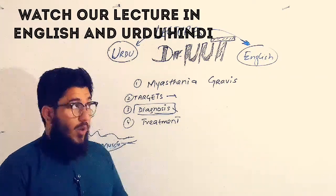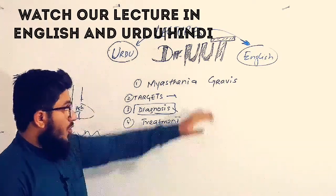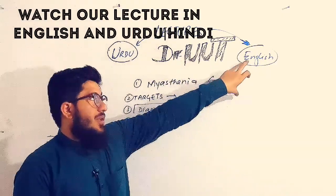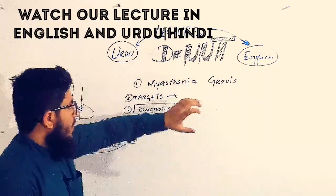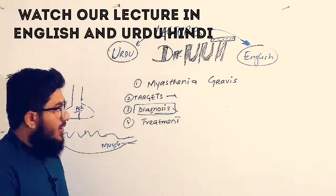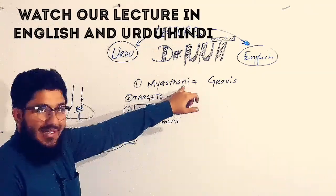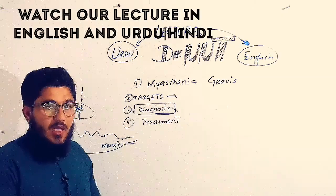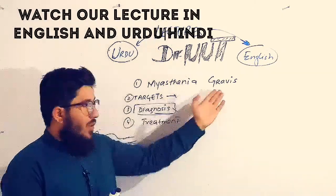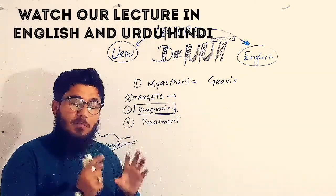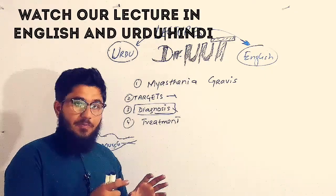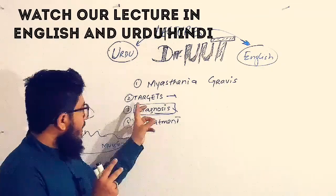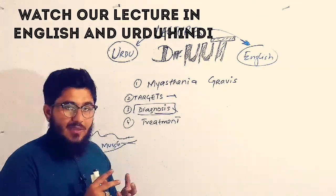Asalaamu Alaikum and welcome to the Dr. UUT channel. Let's proceed with the lecture in English. Myasthenia Gravis is a Latin term which means, as a whole, abnormal muscle weakness. So what are the targets of this disease?